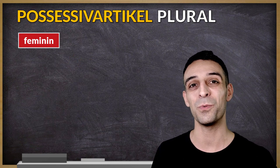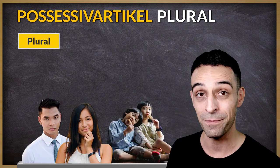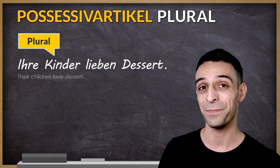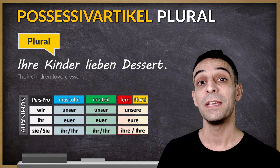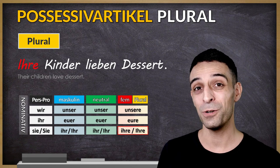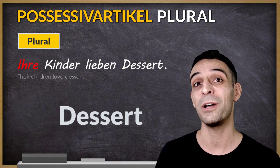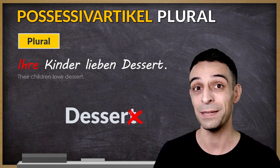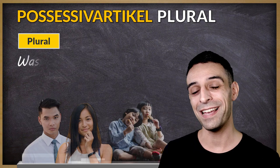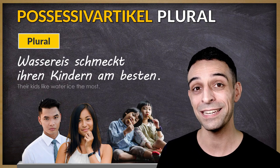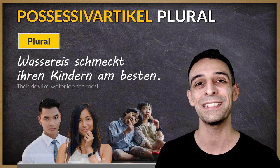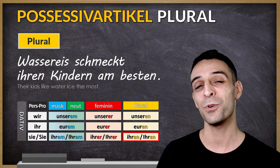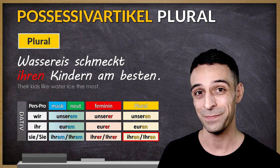In my next example, I will use a verb in plural and I'm not directly talking to them. Ihre Kinder lieben die sehr. Kinder is the subject, plural, nominative case: ihre. Note that the T at the end of 'liebt' is not pronounced in natural speech. Wassereis schmeckt ihren Kindern am besten. Here I use the verb schmecken — one of those verbs that requires dative case: ihren.